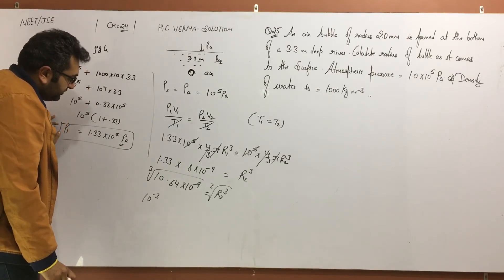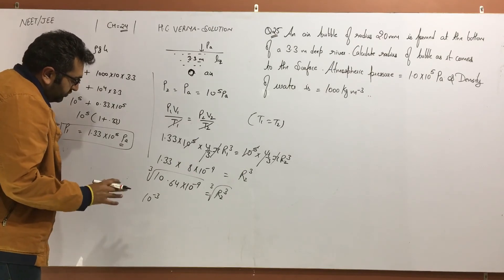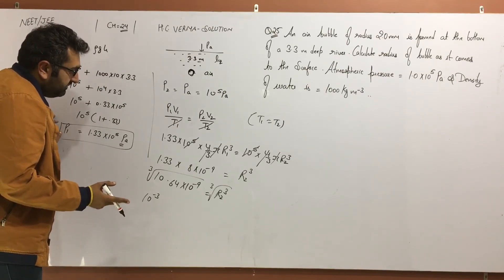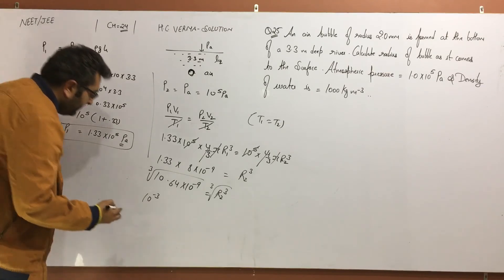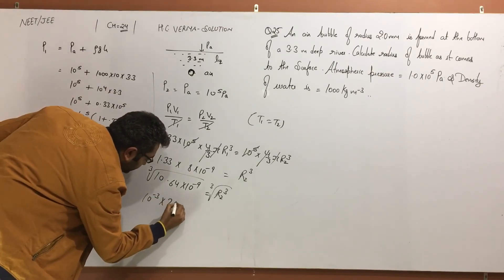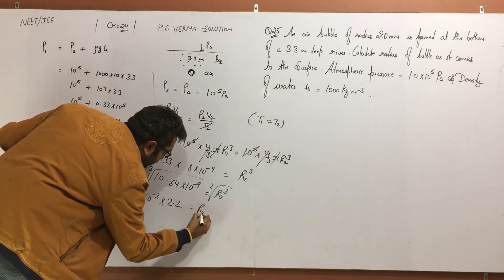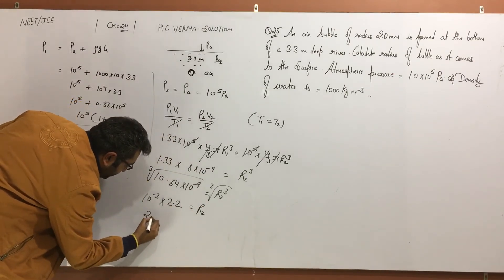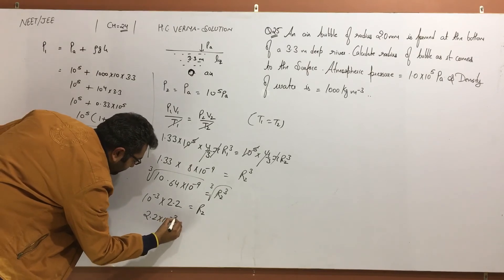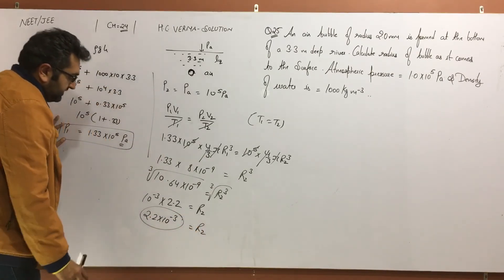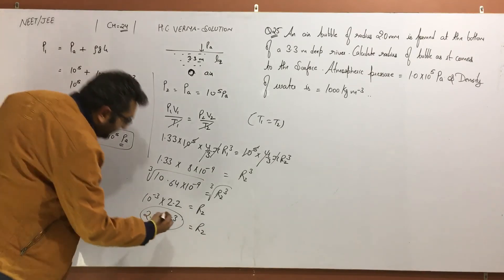R2³ is what? So 1.33 times, that will be 1.33 × 8 × 10^-9. This becomes 10.64 × 10^-9 or 1.064 × 10^-8. R2³ equals 1.33 × 8 × 10^-9. Taking cube root, R2 = 2.2 × 10^-3 meter.